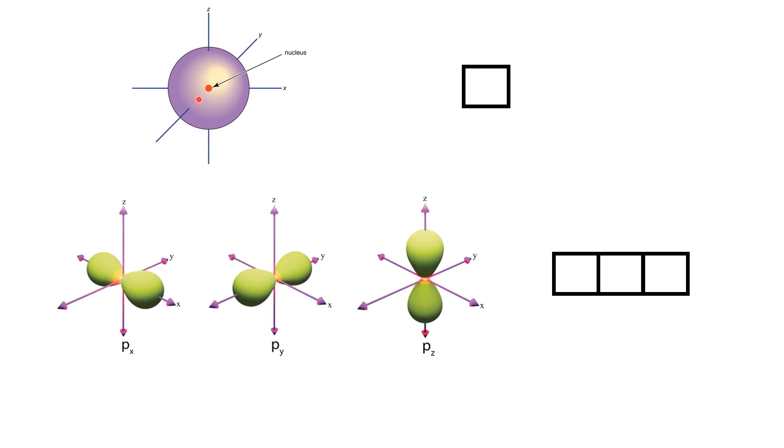Each type of orbital has a unique shape and specific orientations in space. S-orbitals, for instance, have a spherical shape and only one possible orientation. So, in orbital diagrams, they're represented by a single box. P-orbitals have a distinctive dumbbell shape and can align along the x-, y- and z-axes. Since they have three possible orientations, they're represented by three boxes in orbital diagrams.